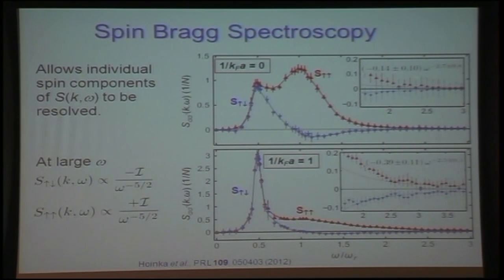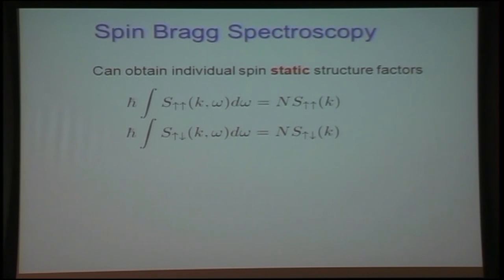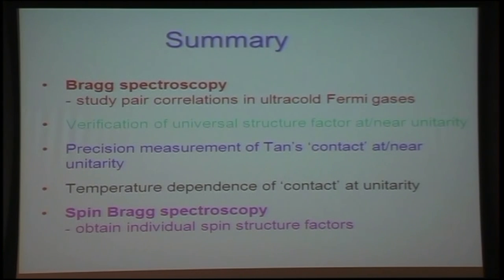At the high frequency end, we see the dependence on omega to the minus five halves as we might expect from the theory. So from the spin Bragg spectroscopy, we can obtain the individual spin static structure factors, as I've summarized here. These ones, the spin parallels, should be unity, and they're consistent with unity. That is no correlation for high momenta. And then the spin anti-parallel factors are given here. So with that, thank you for your attention.